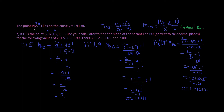The point P(2, -1) lies on the curve y = 1/(1 - x). If Q is the point (x, 1/(1 - x)), use your calculator to find the slope of the secant line PQ for the following values of x: 1.5, 1.9, 1.99, 1.999, 2.5, 2.1, 2.01, and 2.001.